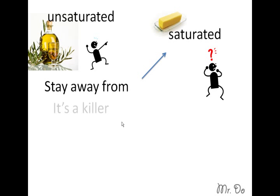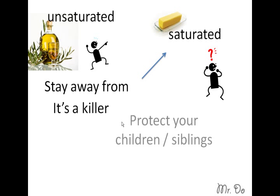Stay away from saturated fat — it's a killer because it tends to solidify at room temperature, just like butter. You get a lot of clogging and your blood flow decreases. Protect yourself and your children and siblings; tell them to stay away from fast food. We already know it's bad for you, and now we have learned why it's bad for you.